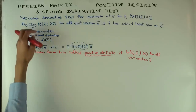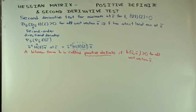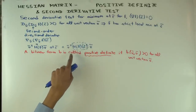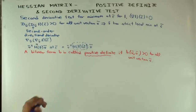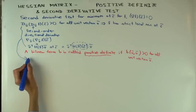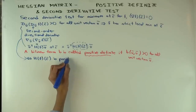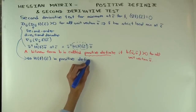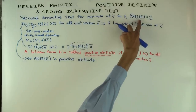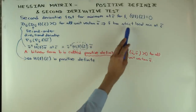What is this condition equivalent to saying about the matrix? The condition that u-transpose H_f(c) u is always positive is equivalent to H_f(c) being positive definite. So if you have a critical point where the gradient vector is zero, and if the Hessian at the point is positive definite, then you have a strict local minimum at the point.